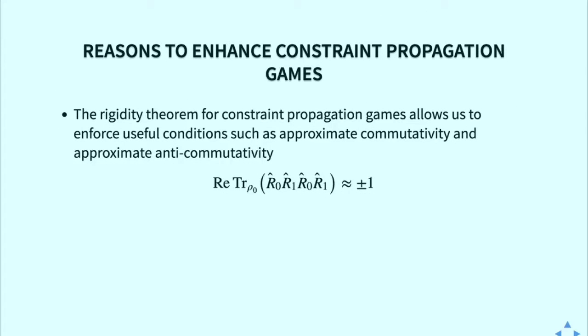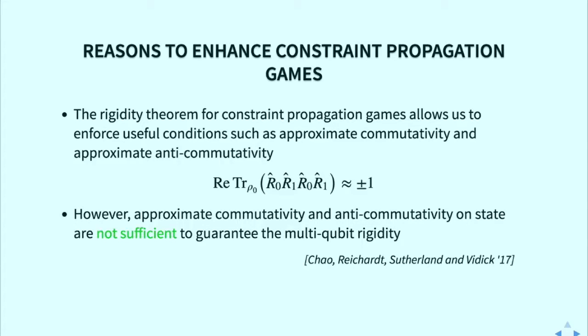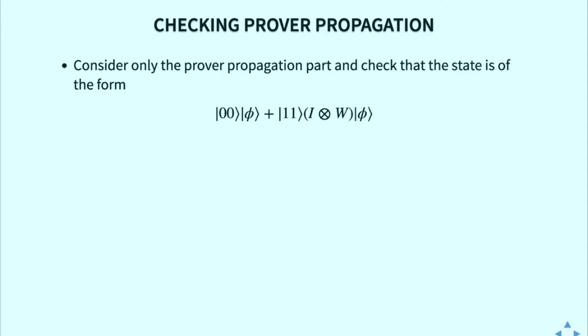Some discussion of why we need to enhance our constrained propagation game. Basically, the constrained propagation game gives you approximate constraint on the state in this form. For example, you can prove that two reflections are approximately commuting or anti-commuting, which gives you much of the structure of the operators. But unfortunately, it's not possible to prove rigidity only with this set of conditions. You would hear more about this at this QIP. It's called overlapping qubits.